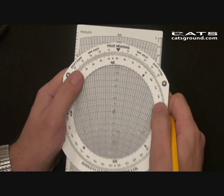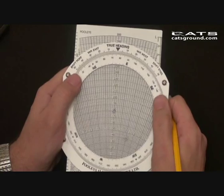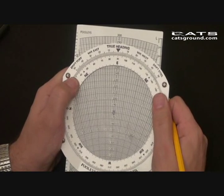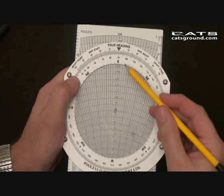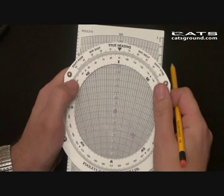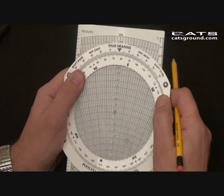And then put the outbound track of 090 under true heading mark. This shows 13 degrees of starboard drift. Place the 090 under 13 degrees of starboard drift.